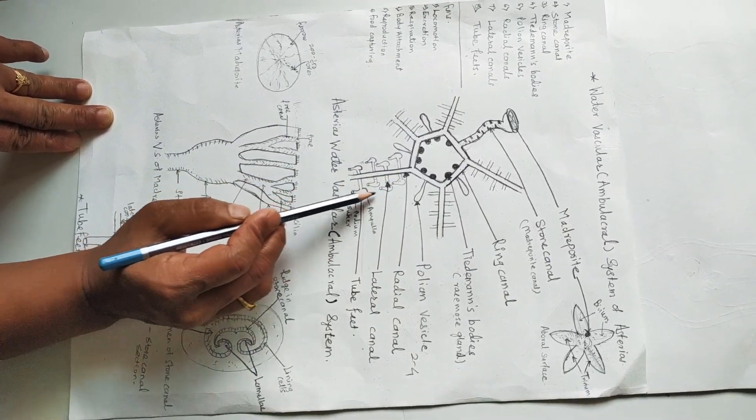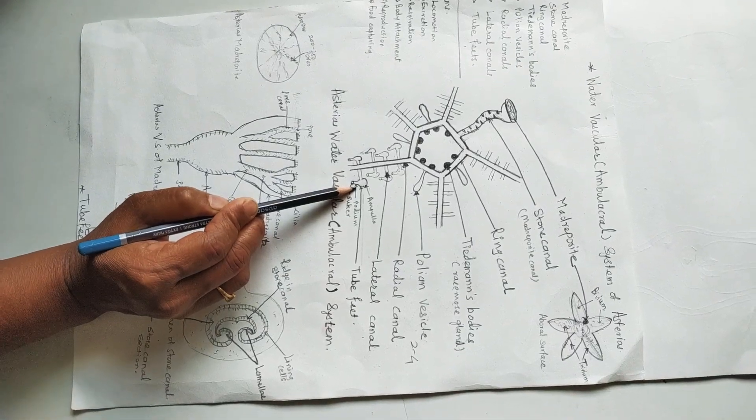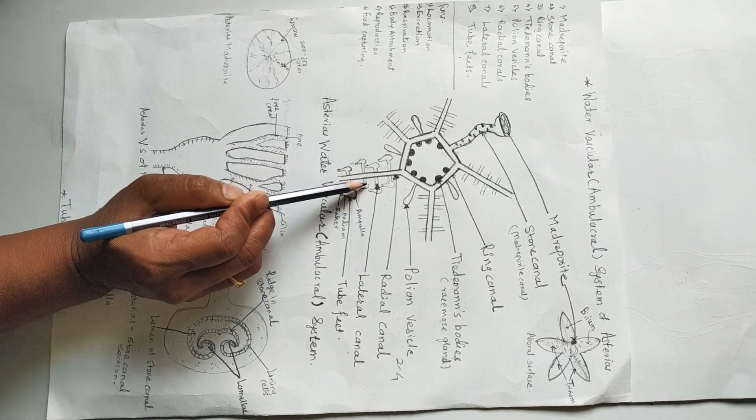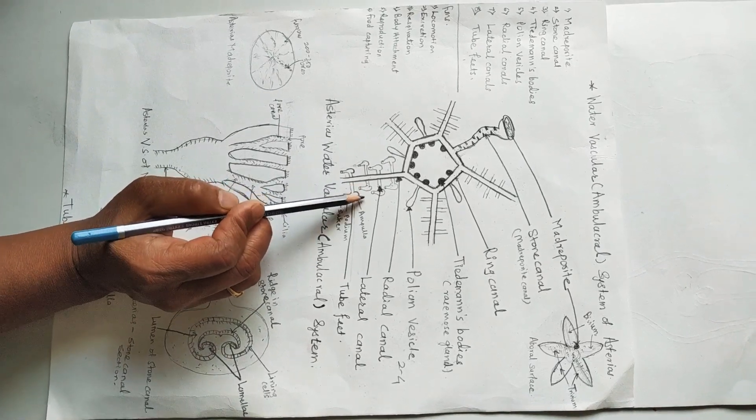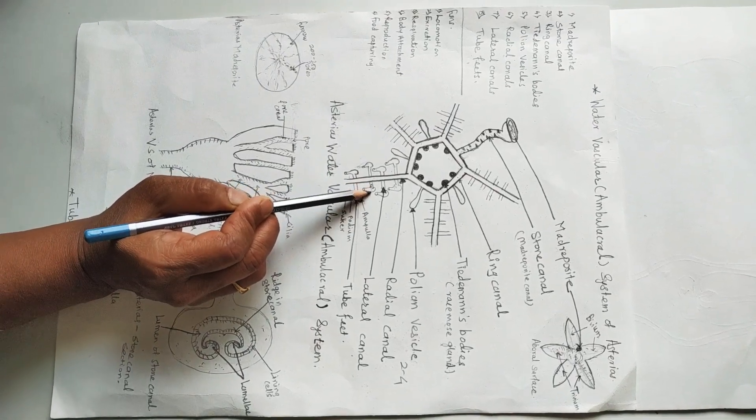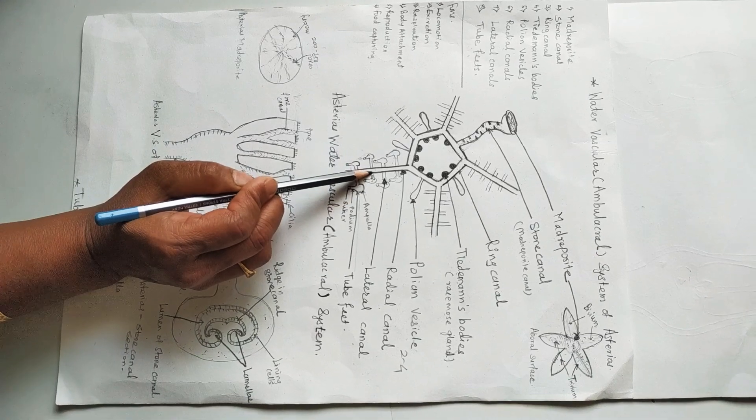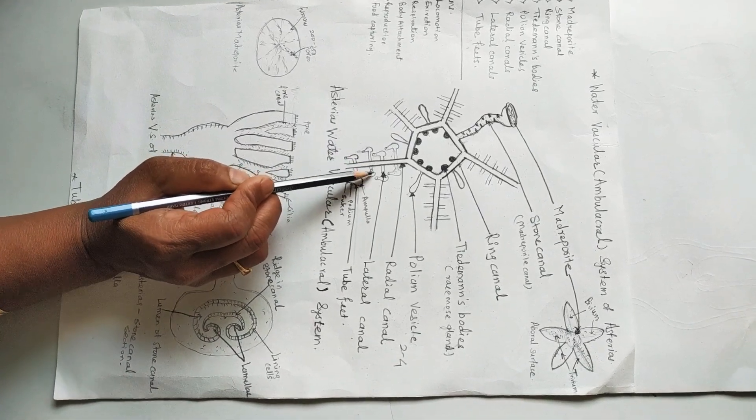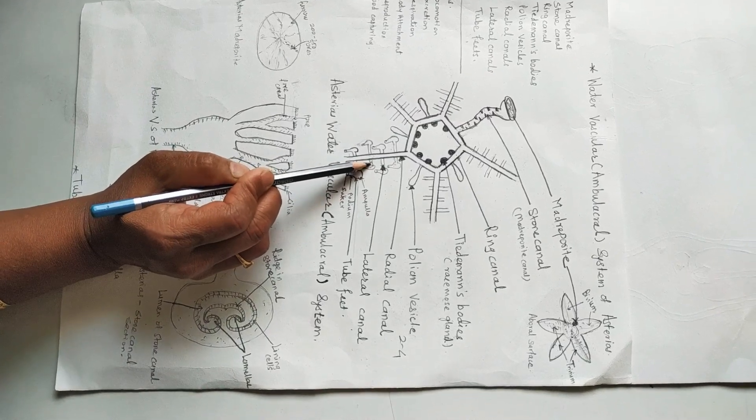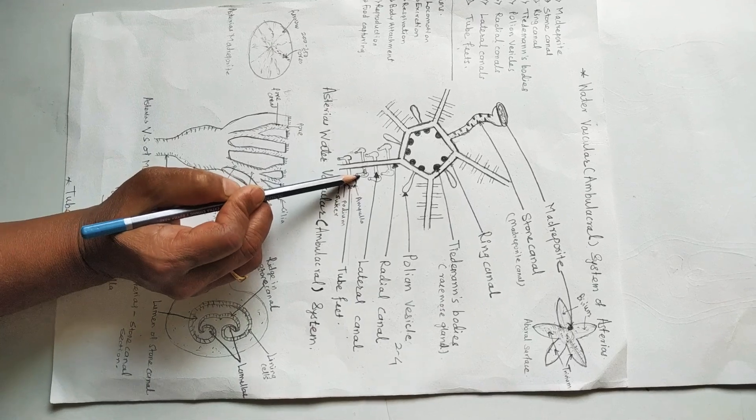Lateral canal, when opened at the part of the ampulla of tube feet, is provided with a valve. So it prevents the backflow of water from the tube feet to the lateral canal, or the reverse flow of the water current. That is avoided due to the valve present at the tip of the lateral canal where it opens into the tube feet.